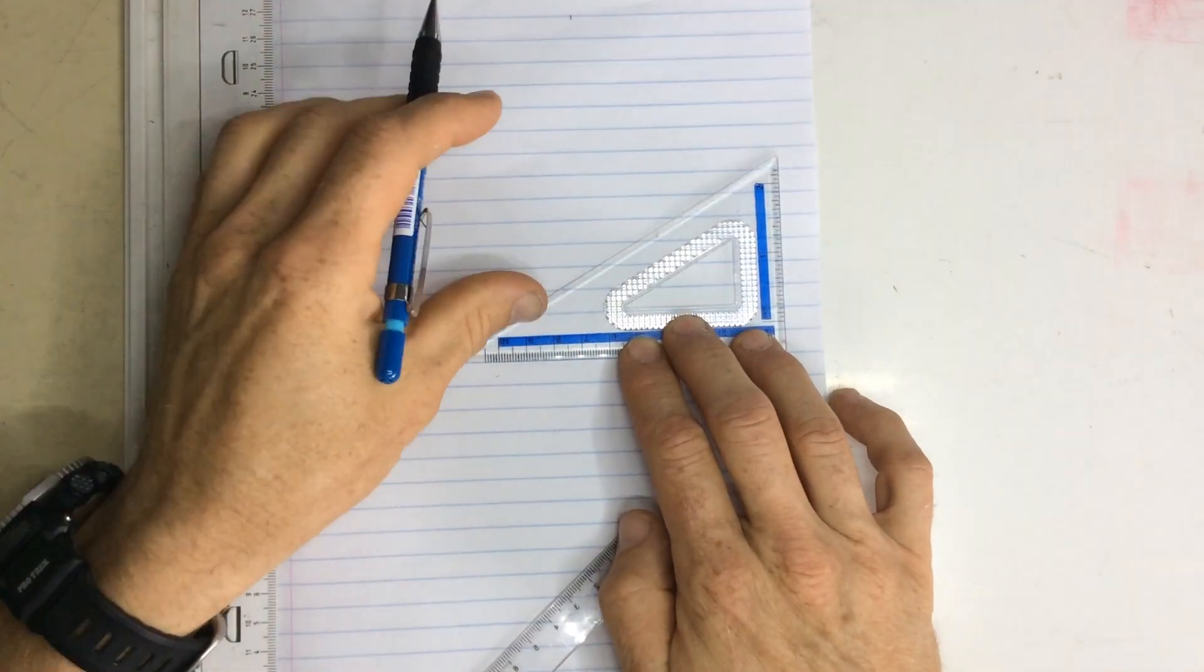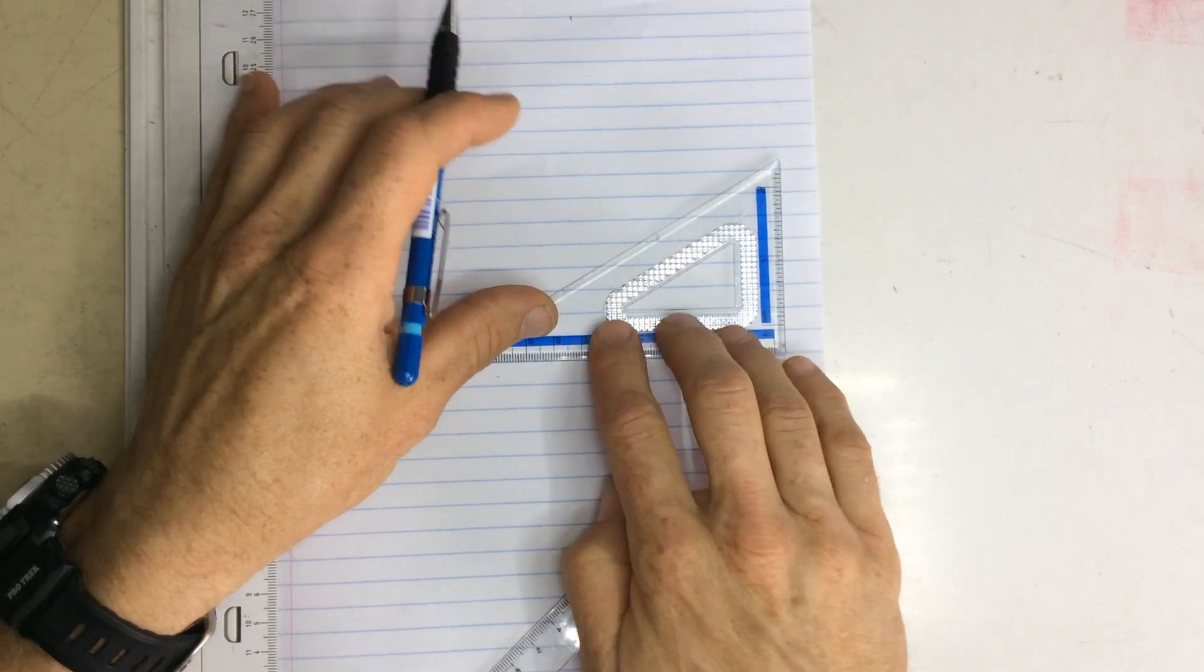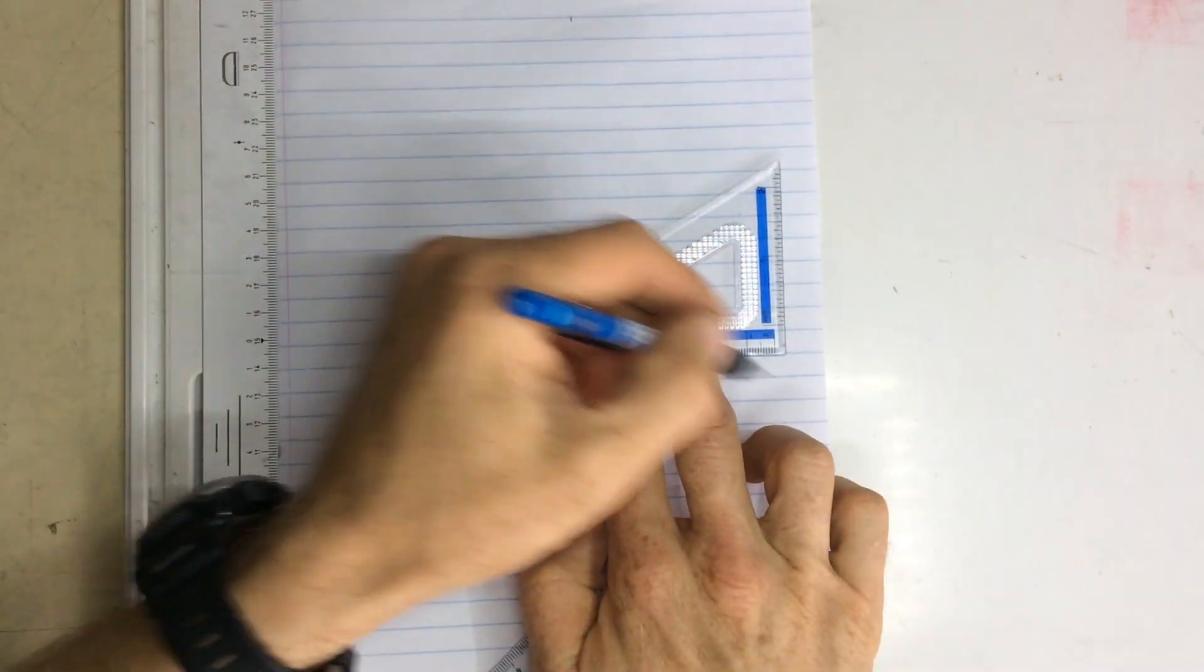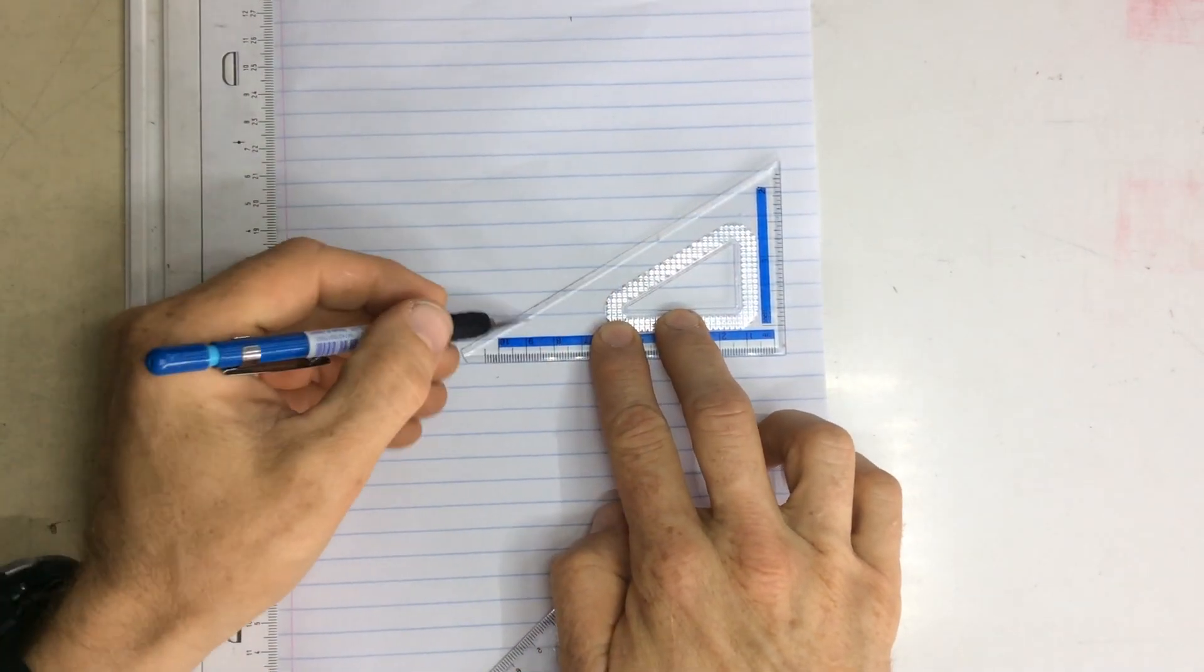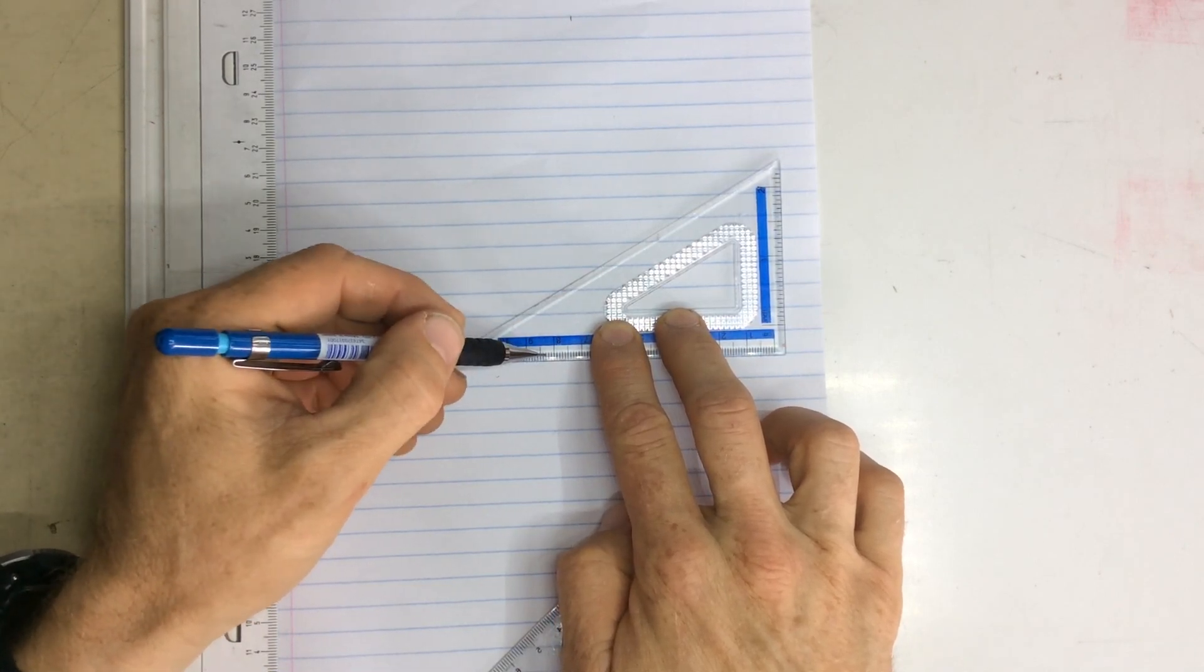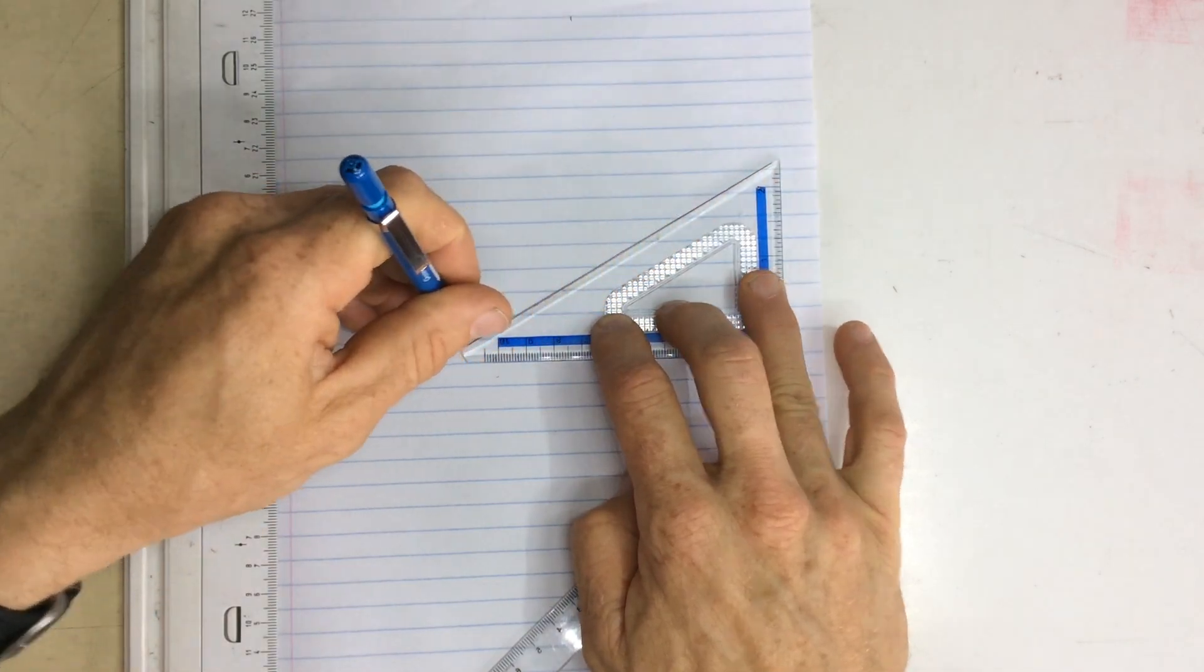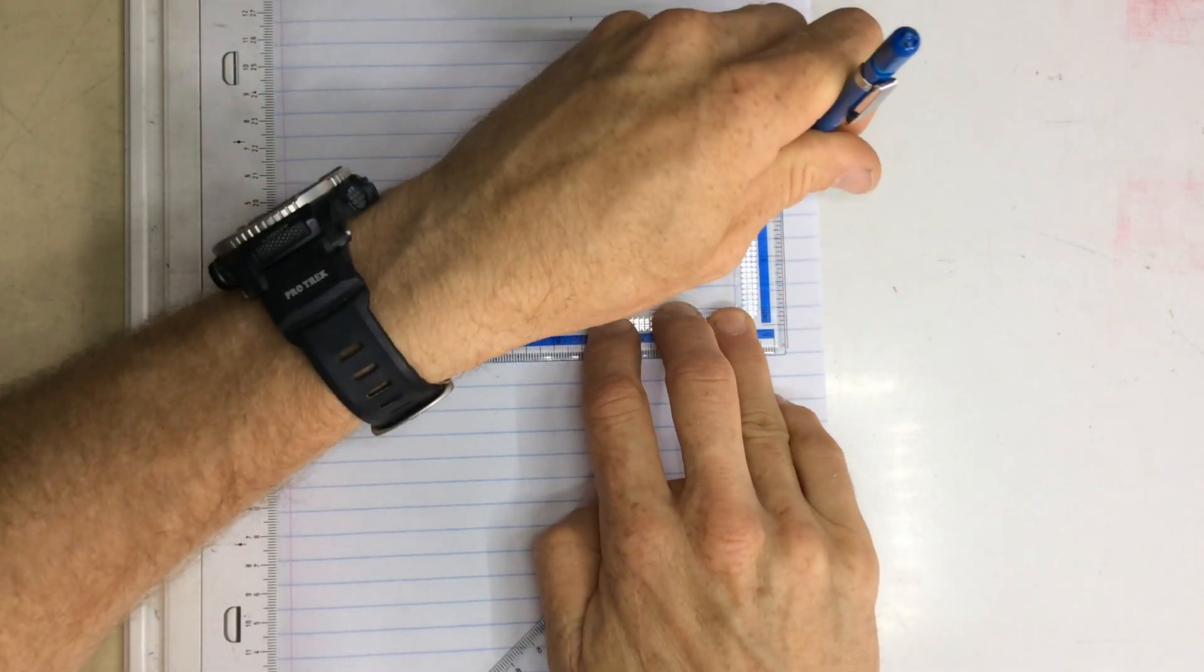We're going to be drawing a three-dimensional ramp for our little skateboard circus thing. I'm going to start out. I've got my 30 degree set square. I know that that's a 30 degree angle there. It's close enough to represent the 22 and a half degree angle. I'm going to trace around the set square very quickly.